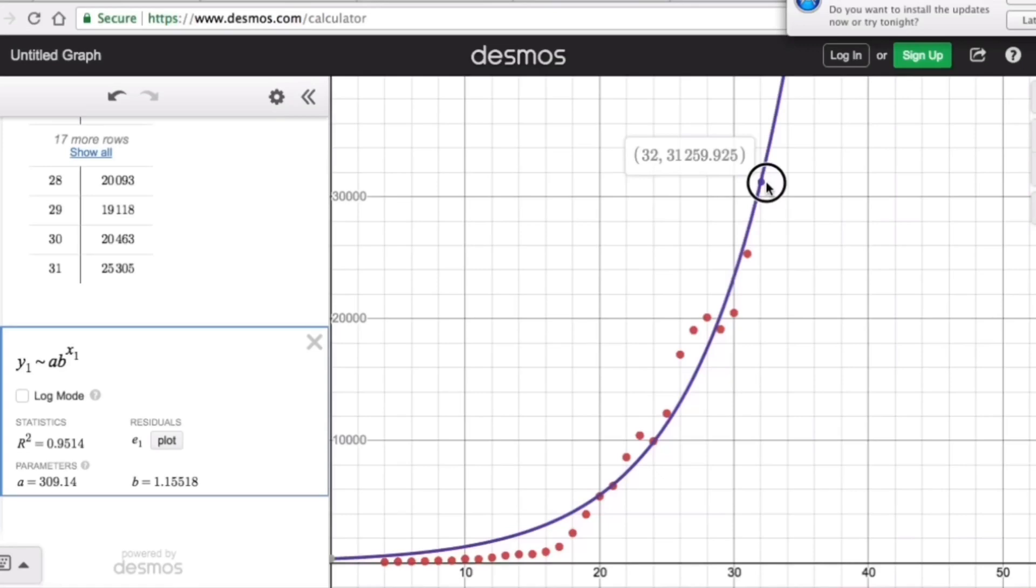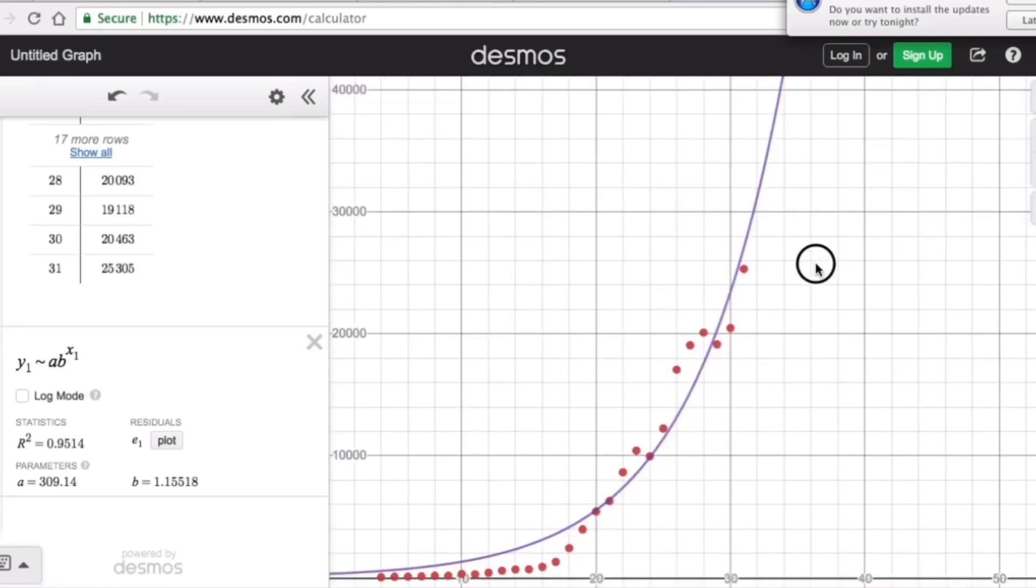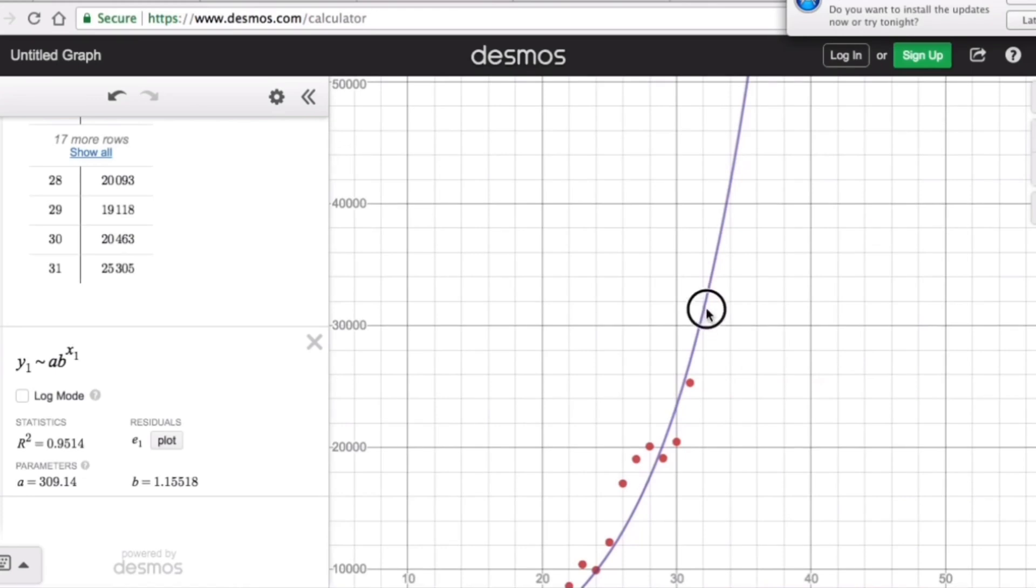So April 1st is 32. Then April 2nd would be 33. So again, we trace the graph all the way to 33. So when x is 33, there are 36,111 cases.